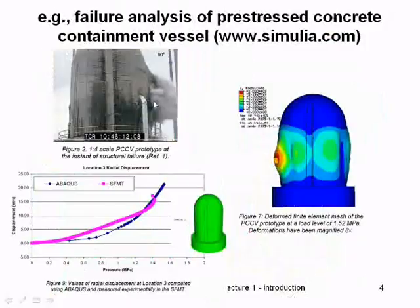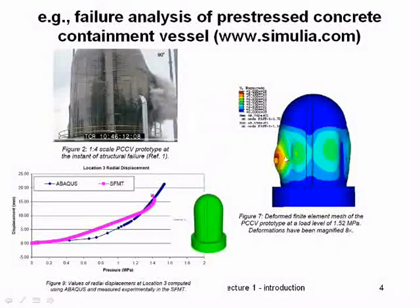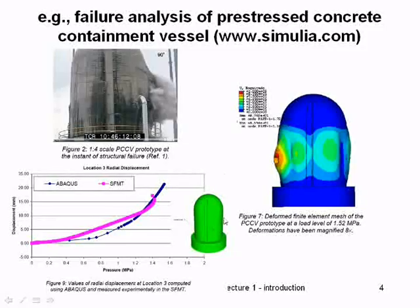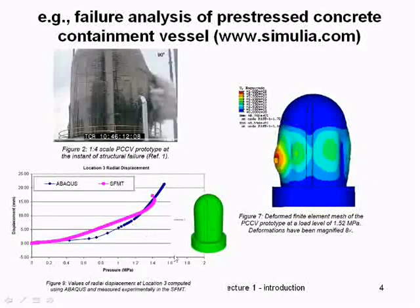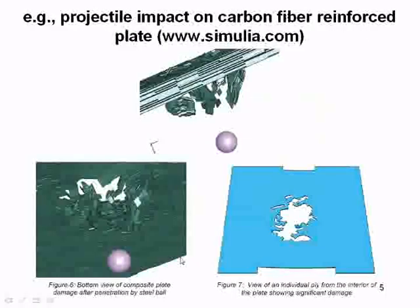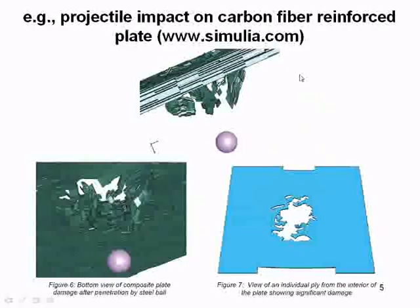Here's a concrete containment vessel — doing the stress analysis, just showing displacements. You can find this online; they do a comparison. Another example is impact through a carbon fiber reinforced plate.